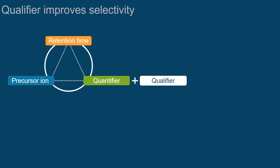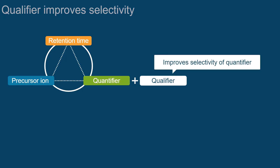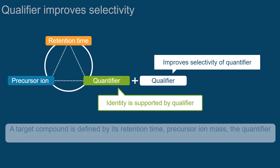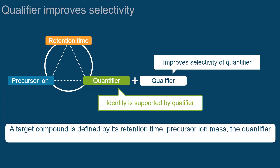In conclusion, the purpose of a qualifier is to improve the selectivity of your quantitation method, as the identity of your quantifying fragment ion mass is further supported by its corresponding qualifier. So we can say that a target compound is defined by its retention time, the precursor ion mass, as well as the quantifier and the qualifier fragment ion masses.